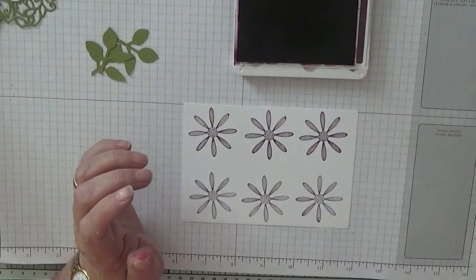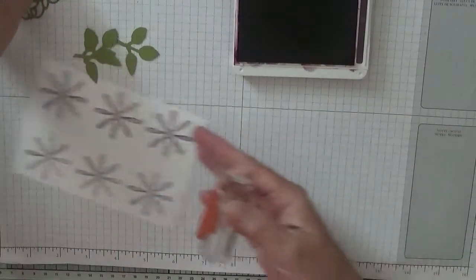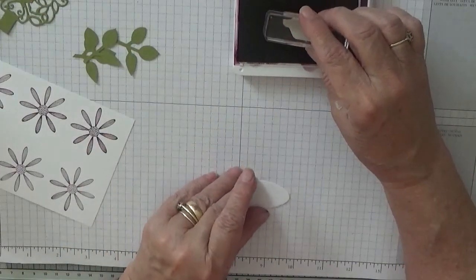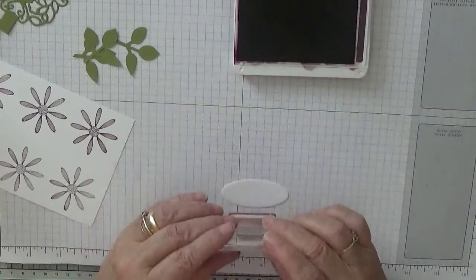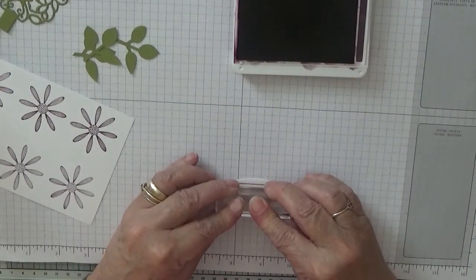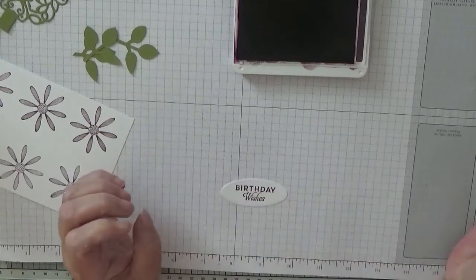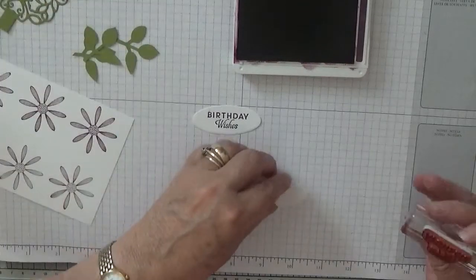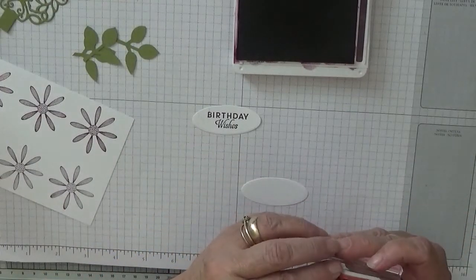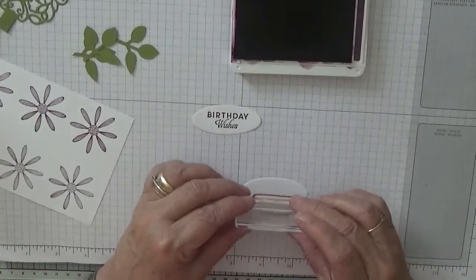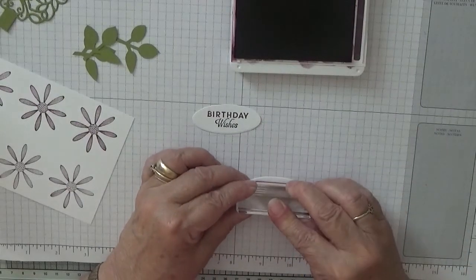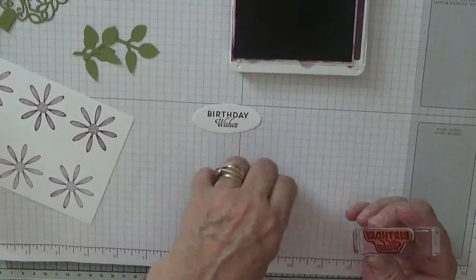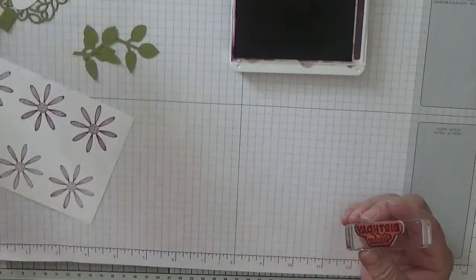Right, and while we've got Blackberry Bliss, we will stamp out our sentiment and just pop Birthday Wishes on there. That's not very straight. Let's do another one because I did cut two. That's better. So I'll have that one, not that one.